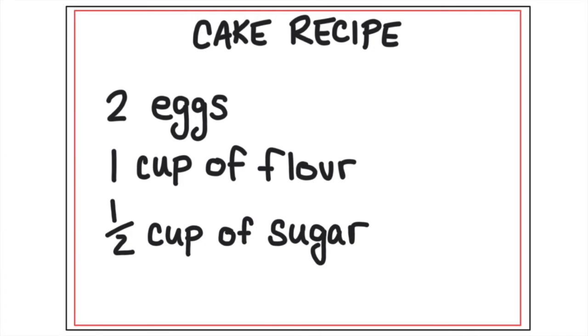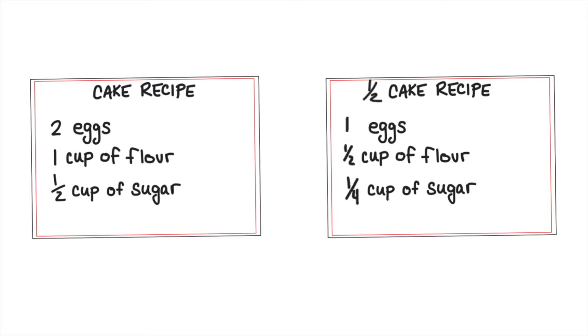This cake recipe calls for two eggs, one cup of flour, and half a cup of sugar. What if I only had one egg? Could I still make a cake? I could — I could just make a smaller cake. I could cut the recipe in half, so I would only use one egg, half a cup of flour, and a quarter cup of sugar, and I would make half a cake.